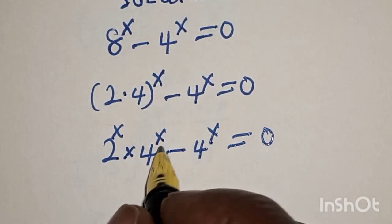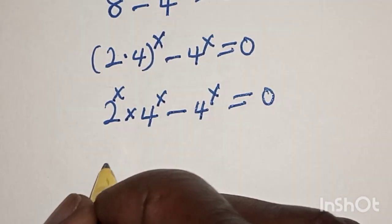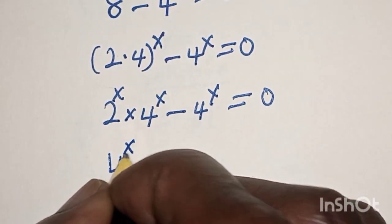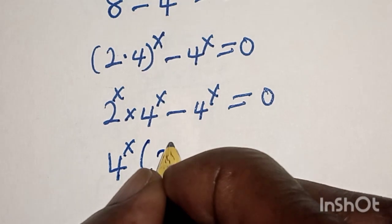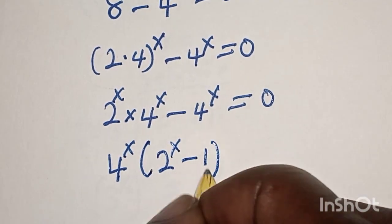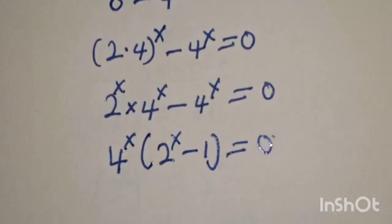Now in this case, 4 raised to power x is common, we bring it out. 4 raised to power x into 2 raised to power x minus 1 is equal to 0.